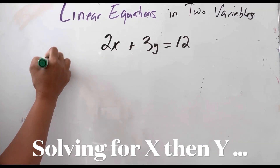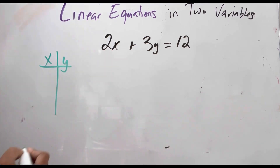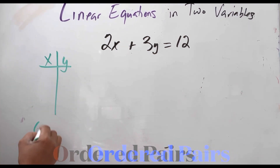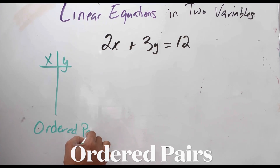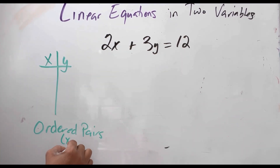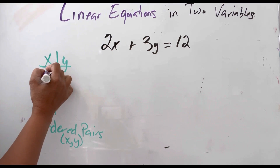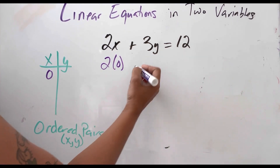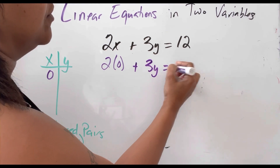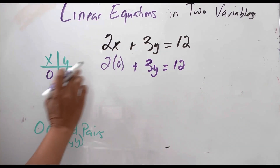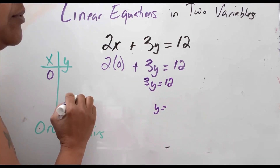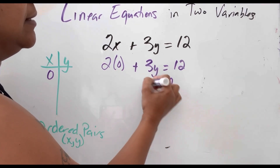The first thing we're going to do is assign some values for x and y. When I assign a value for x or y, I'm going to get the other one, giving me my ordered pairs. An ordered pair is x comma y. The easiest thing to do is insert zero for x. So 2 times 0 is 0 — that's why I substituted 0 — leaving 3y equals 12. Dividing both sides by 3, y equals 4.